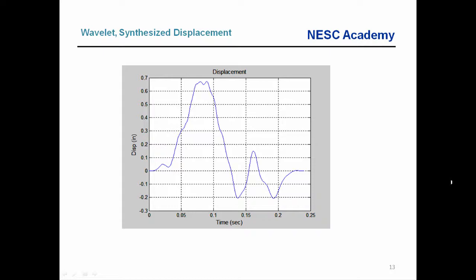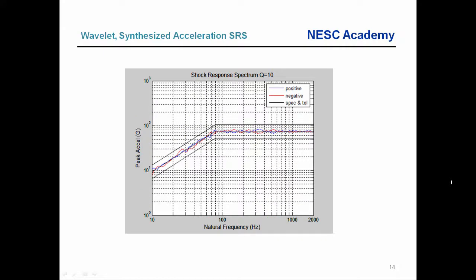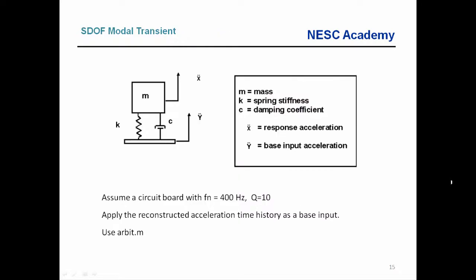For the case of an arbitrary input like we have, we use a convolution integral which is inefficient to solve, so we instead use a David O. Smallwood ramp-invariant digital recursive filtering relationship. I have a case called out for 400 hertz, Q equal to 10. Looking at our SRS, at 400 hertz we're into the plateau region and we have 75 Gs.